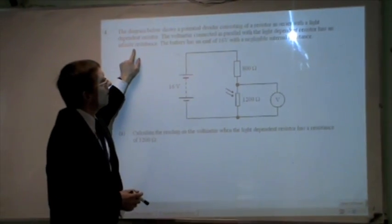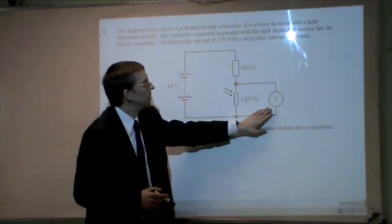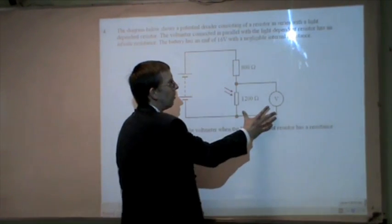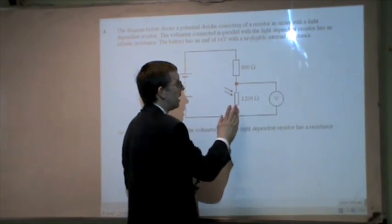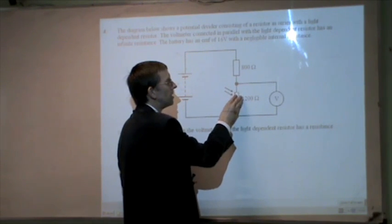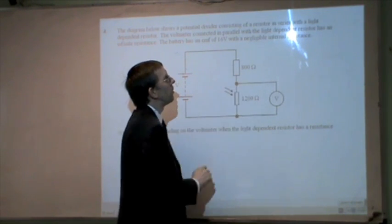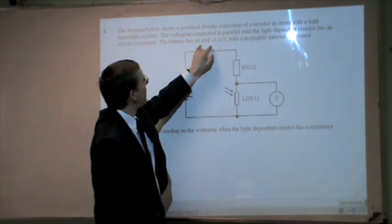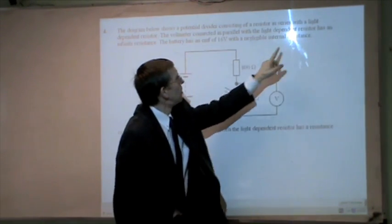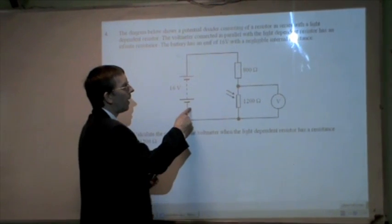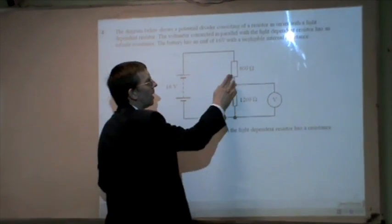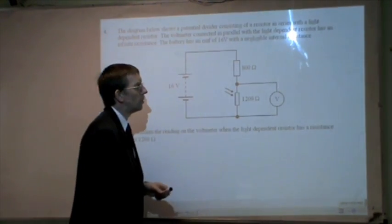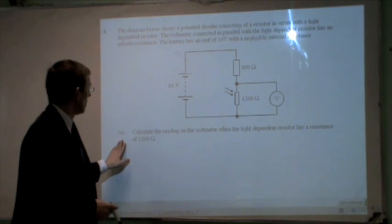So it's telling me that the voltmeter has an infinite resistance, so I don't need to worry about resistors in parallel here. I just need to worry about that resistor being in series with that one. And it's also telling me that the battery has no internal resistance, so I don't have to worry about an extra resistor here. Again, I only need to worry about those two. So the question,